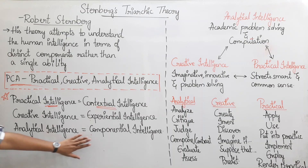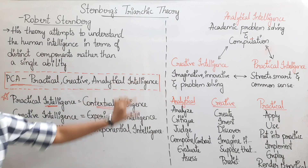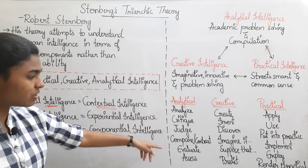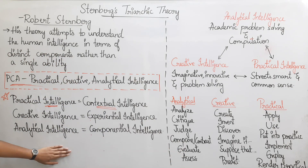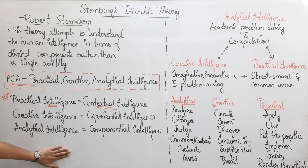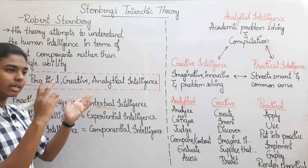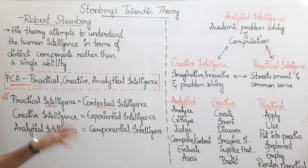To analyze Analytical intelligence, you can: analyze, criticize, judge, compare, contrast, evaluate, and assess. If there are more than two things, you can compare them. These are the key action words for Analytical intelligence.